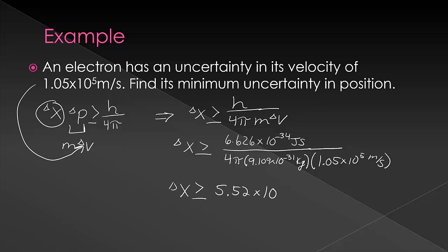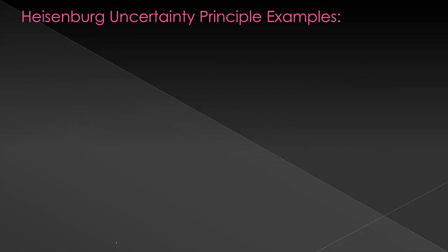There is a silly chemistry joke that goes along with this principle. It says that Heisenberg was pulled over by a police officer who asked, do you know how fast you are going? And Heisenberg responds by saying, nope, but I know exactly where I am.